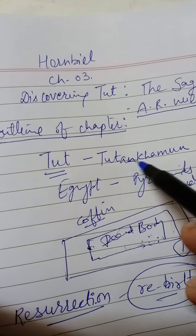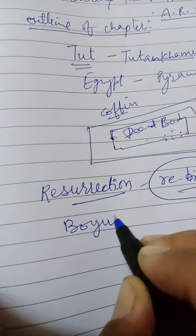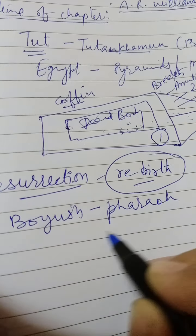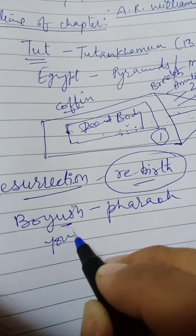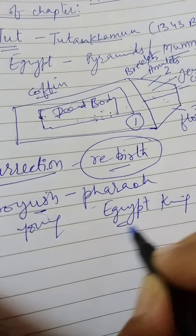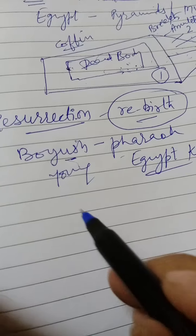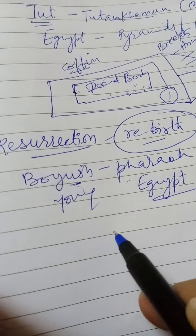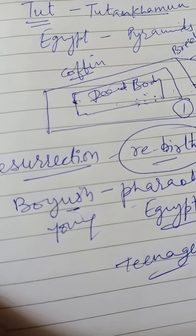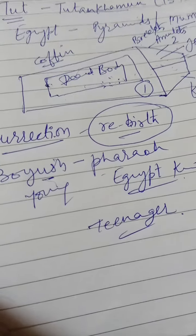Now, coming to the chapter — we have Tutankhamun, a young pharaoh, a boy pharaoh, meaning Egypt's king. He died at the age of teenage — he was a teenager. Basically, this chapter provides us a deep insight into man's desire to know and analyze the roots of our civilization.